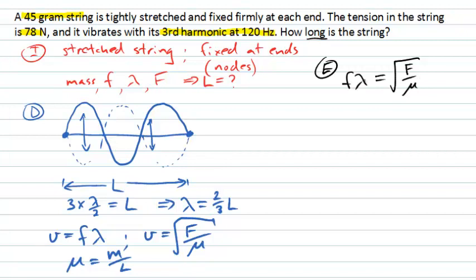And remember, I can write the wavelength in terms of the length of the string. I can also write the mass per unit length in terms of the length of the string. So if I substitute those in, I now have a frequency. My wavelength, remember here, is two-thirds the length of the string for the third harmonic.